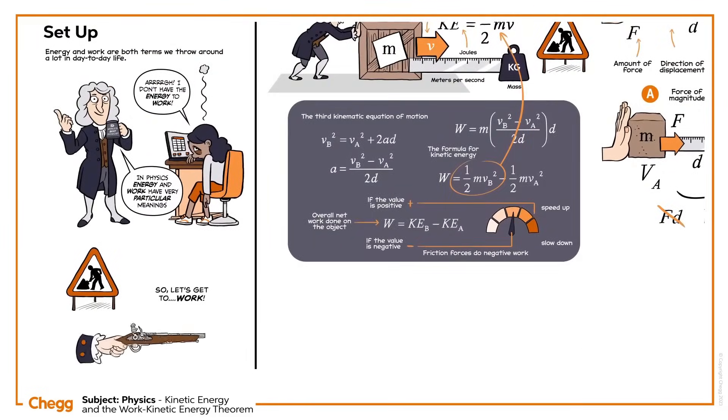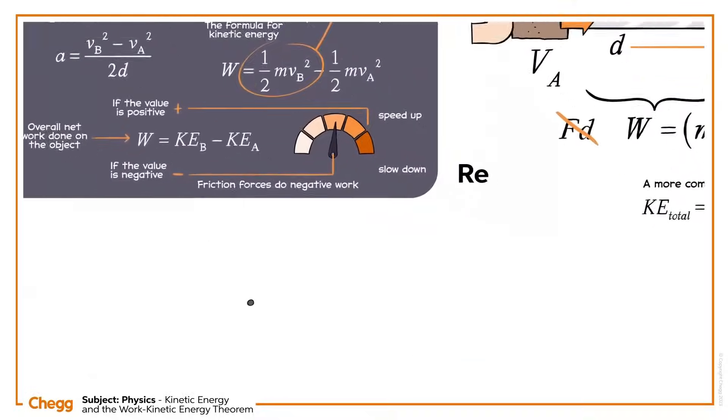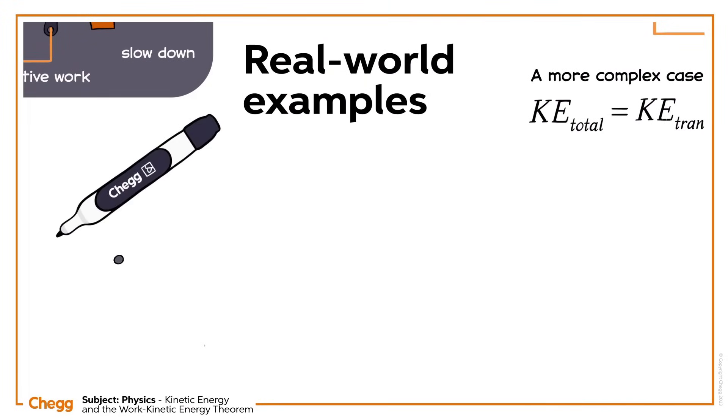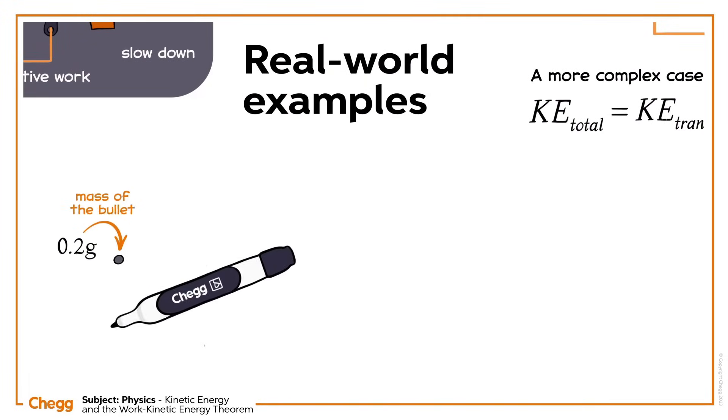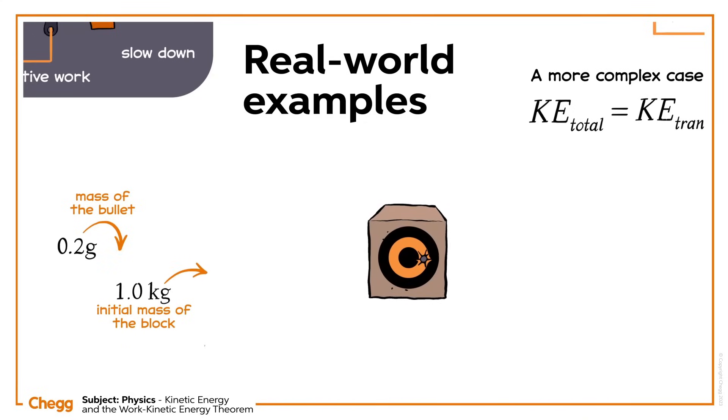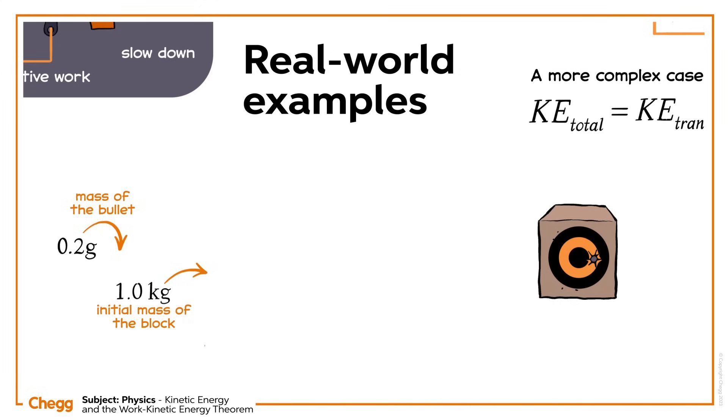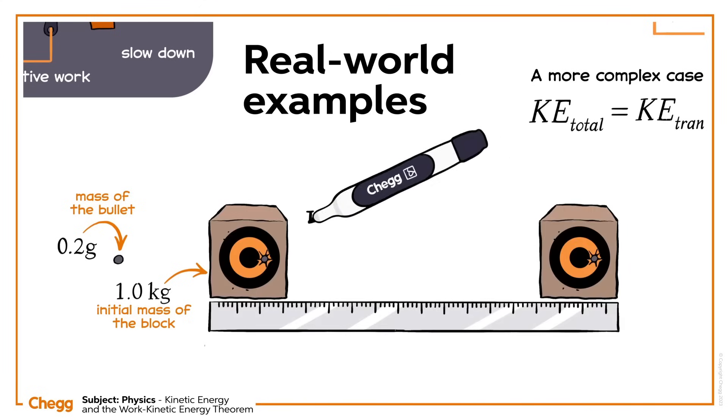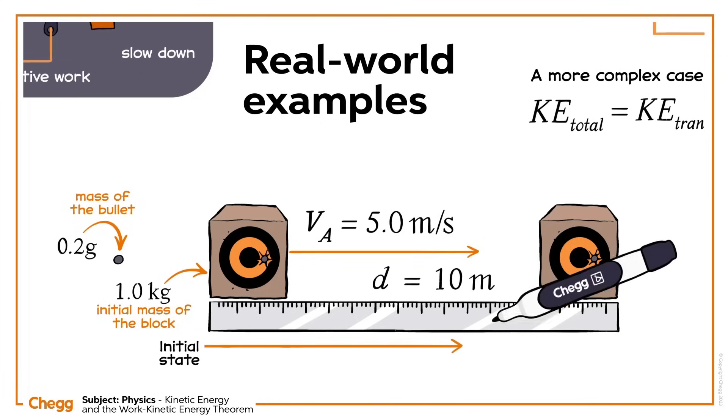Are you ready to put these equations into action? In an example, say a bullet of 0.2 grams is fired at a 1 kilogram wooden block. The bullet becomes embedded in the wood, and due to the bullet's force, the block moves with an initial speed of 5 meters per second before coming to a standstill after 10 meters. What's the friction force between the block and the surface?